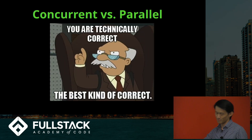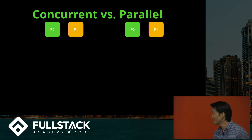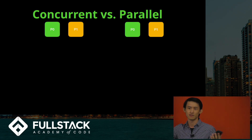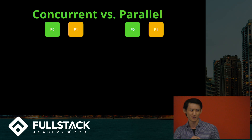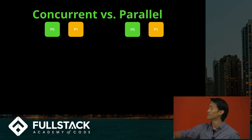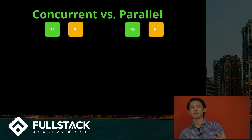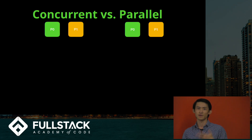Let's talk quickly about concurrency versus parallelism — it's a little bit of a technicality, but technically correct is the best kind of correct. Concurrency means that many things are running in the same period of time, while parallelism means that two things can be happening in the exact same moment.